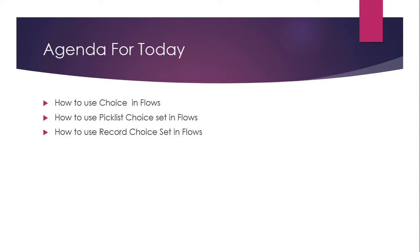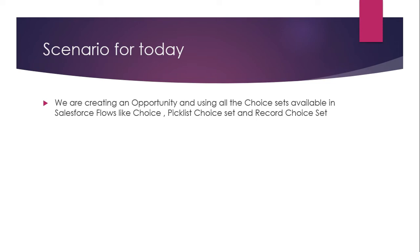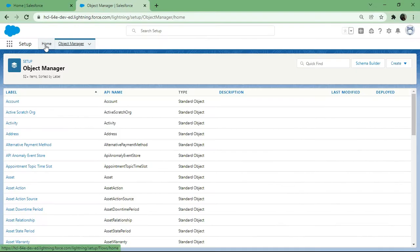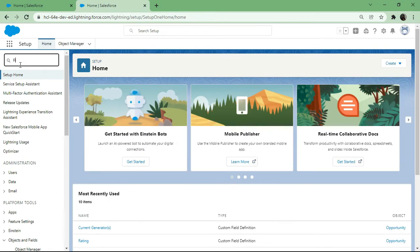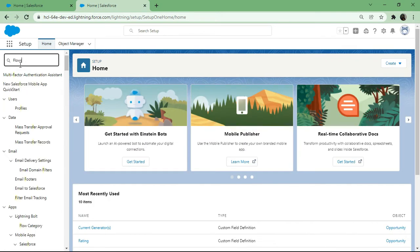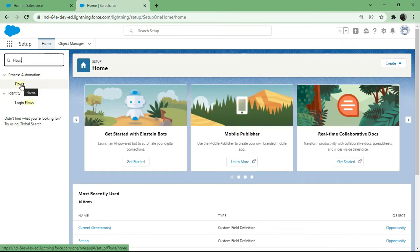The scenario for today is that we are creating an Opportunity using all the choice sets available in Salesforce flow — Choice, Picklist Choice Set, and Record Choice Set. Without wasting time, I'll jump into my Salesforce browser screen, go to Home, and in Quick Find I'll type 'Flows', since flow comes under Process Automation, and hit on Flows.